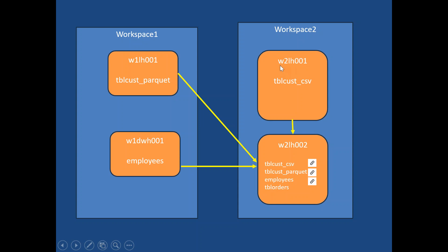In Workspace Two, I'll create W2_LH001 — the first lake house in Workspace Two. In that lake house, I'm going to create a custom table using a CSV file. I also want to access data from Workspace One's lake house and Workspace One's data warehouse in Workspace Two Lake House 002. When I create shortcuts, you'll see the shortcut link symbols appear, showing these are links pointing to their actual locations.